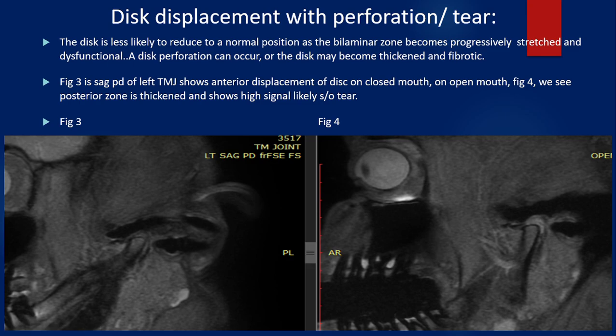Disc displacement with perforation or tear: the disc is less likely to reduce to a normal position as the bilamellar zone becomes progressively dysfunctional. Disc perforation can occur, or the disc might become thickened and fibrotic. As shown in figure 3, the sagittal PD of a left TMJ shows anterior displacement of the disc on a closed mouth. The posterior zone is thickened and shows high signal, most likely representing a tear of the disc.